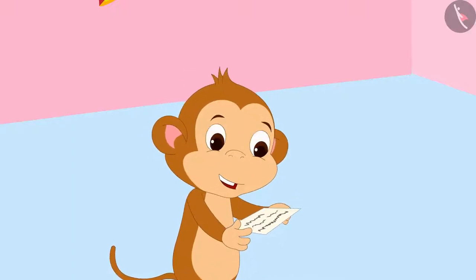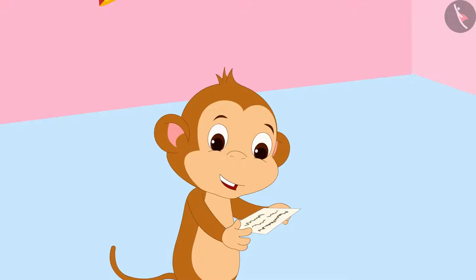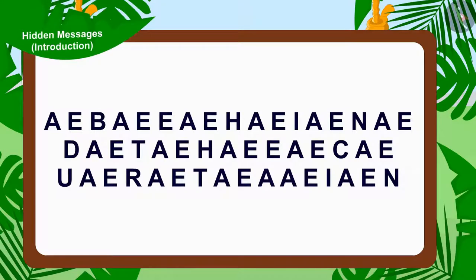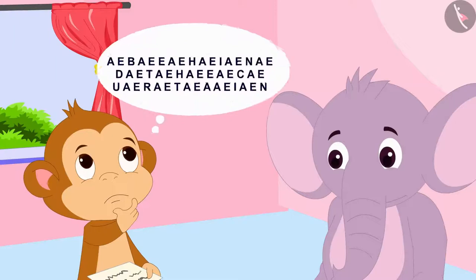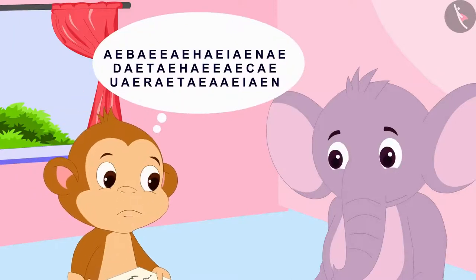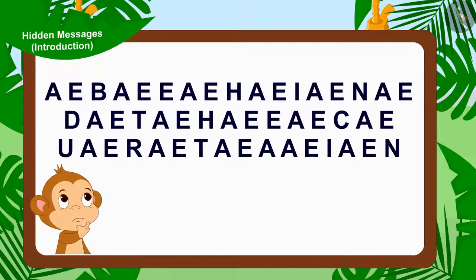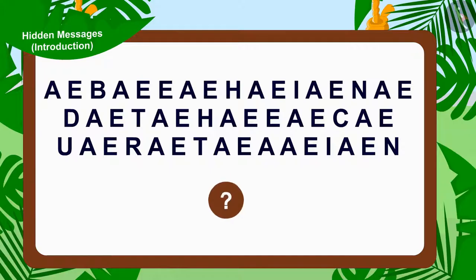When Baban opened the first letter, he found something like this written in it. Baban could not understand anything. Baban started thinking, 'I can't understand clearly what is written using these alphabets.' Children, do you understand the clue written in Appu's letter?